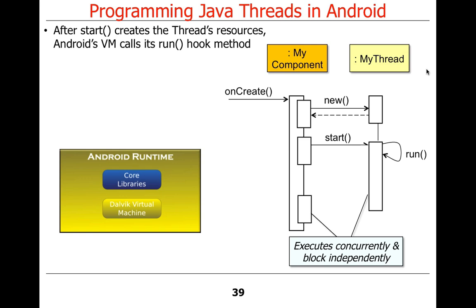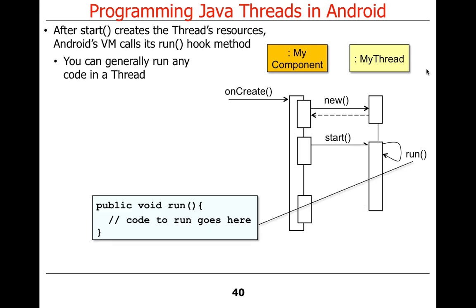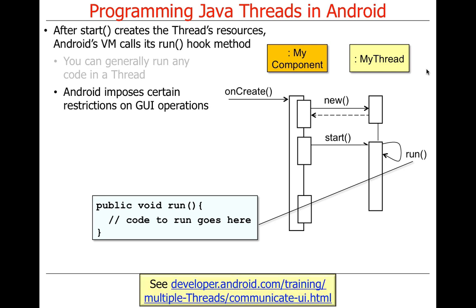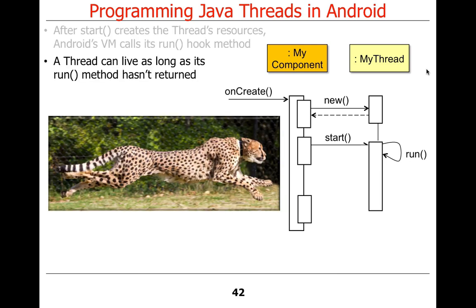The cool thing is that these different threads of control can now block independently of each other. The background thread can be blocking on I/O or a file, while the UI thread interacts with the user — so we're now able to have things running concurrently. In Android, certain limitations are imposed: you can't use user interface calls from a background thread. As long as run hasn't returned and no exception propagates out of run, the thread is considered alive, and you can check that with the isAlive method.